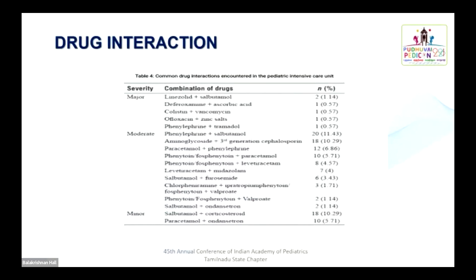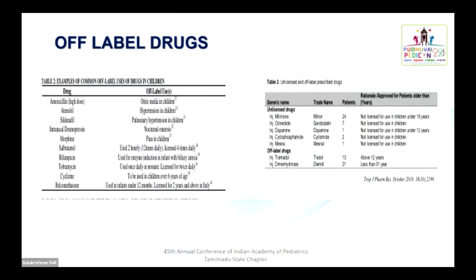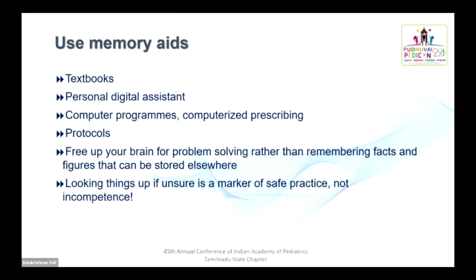While prescribing off-label drugs, we should be very careful in medical-legal aspects. If there is no suitable drug available for the benefit of the child, we can use off-label drugs with minimal adverse effects and side effects. To practice rational prescription, we can use memory aids in the form of textbooks, personal digital assistance, computer programs, and computerized prescribing following standard protocols. Free up your brain from remembering facts and figures — look things up if going in the wrong direction. It is a marker of safe practice, not a marker of incompetence.